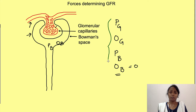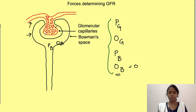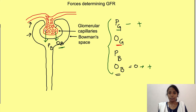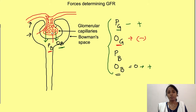Among these, which forces promote filtration and which oppose it? The hydrostatic pressure of the glomerulus is a push force, so it promotes filtration. The oncotic pressure of the Bowman's space is a pull force pulling water toward the tubules, so it also promotes filtration. The oncotic pressure of the capillaries opposes filtration, and the hydrostatic pressure of the tubules also opposes filtration.